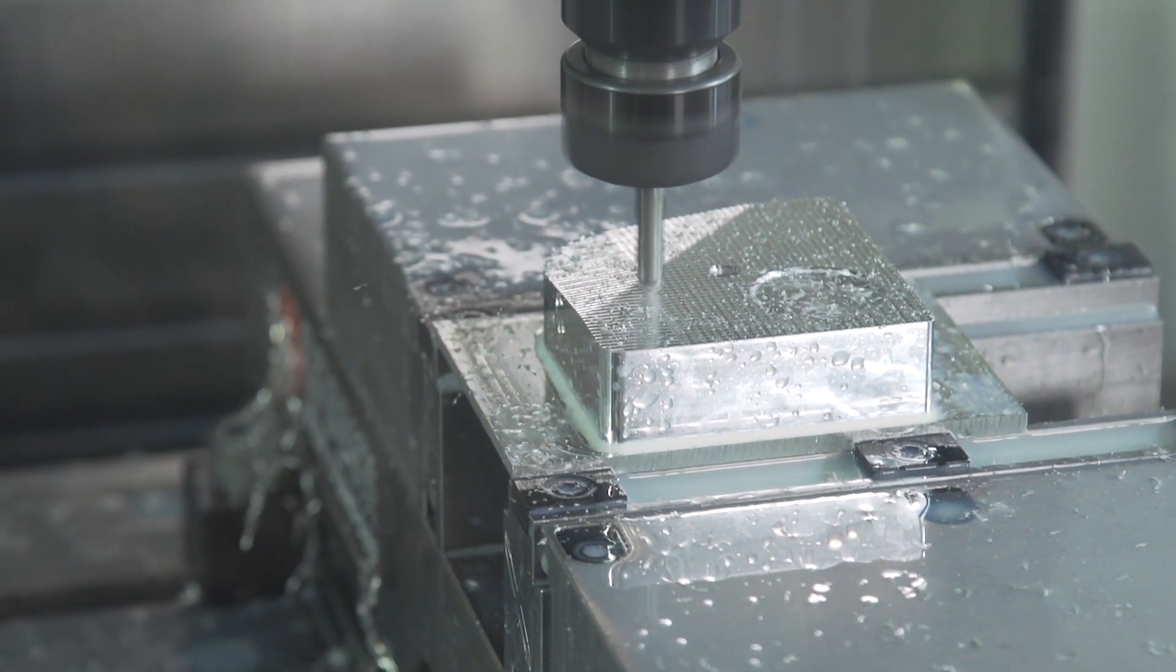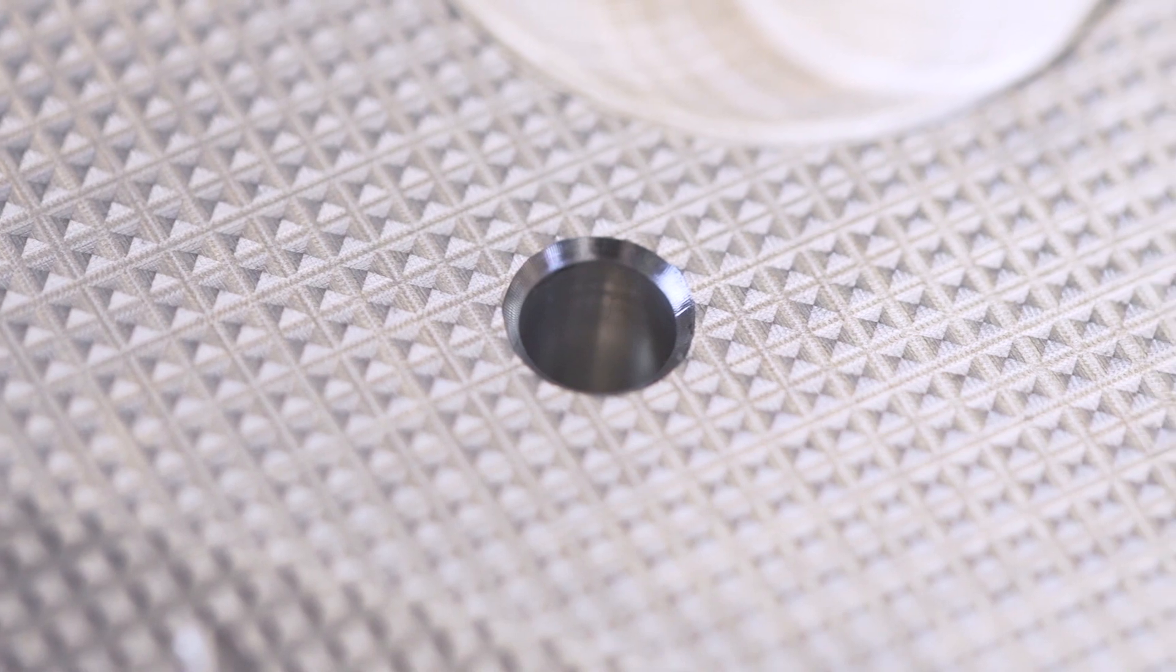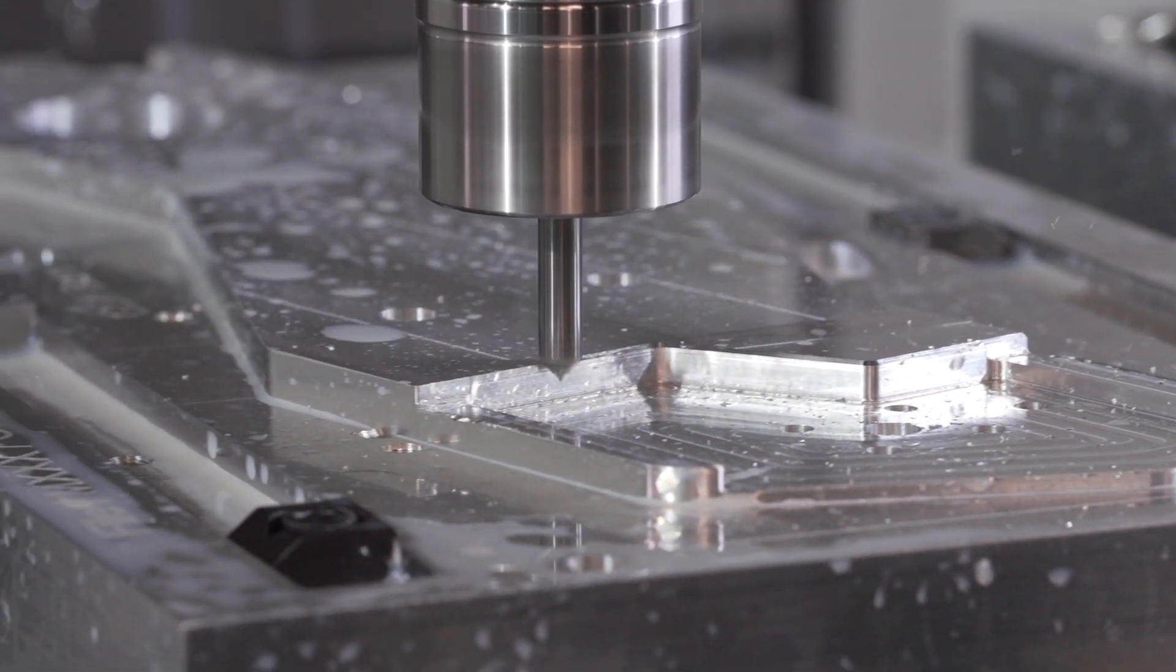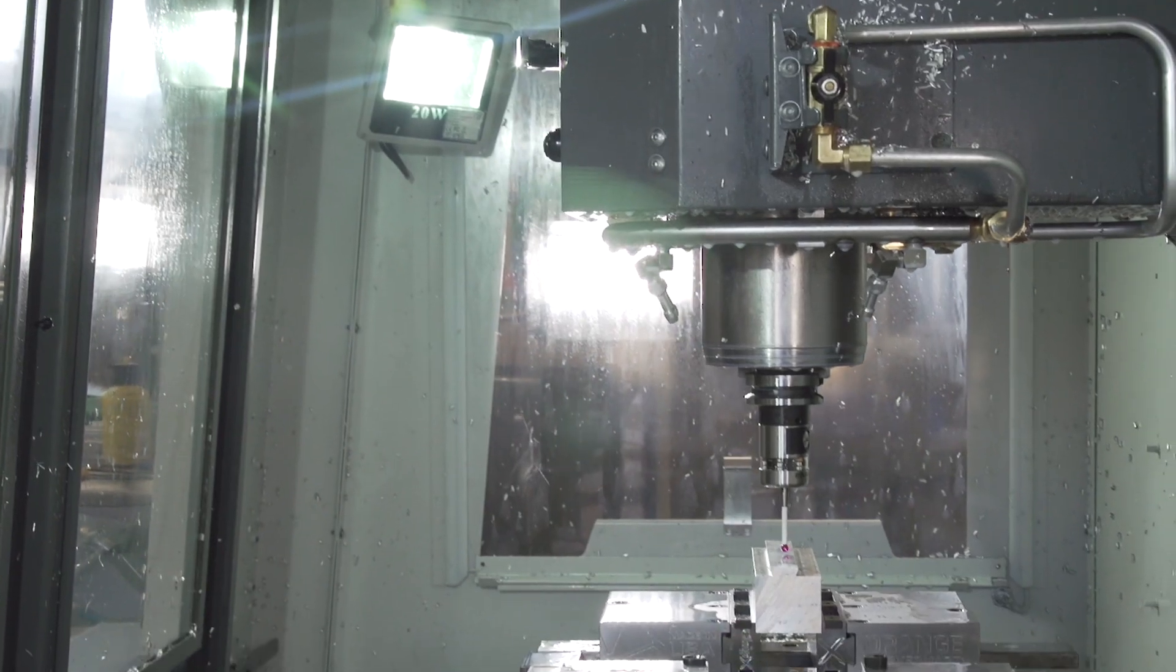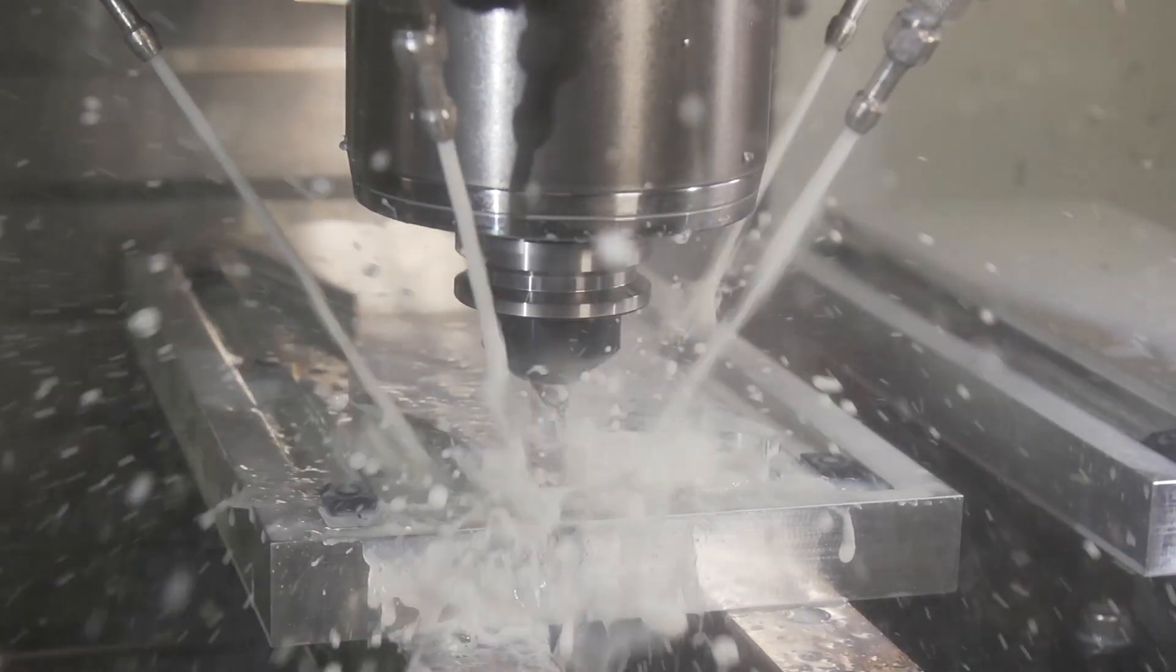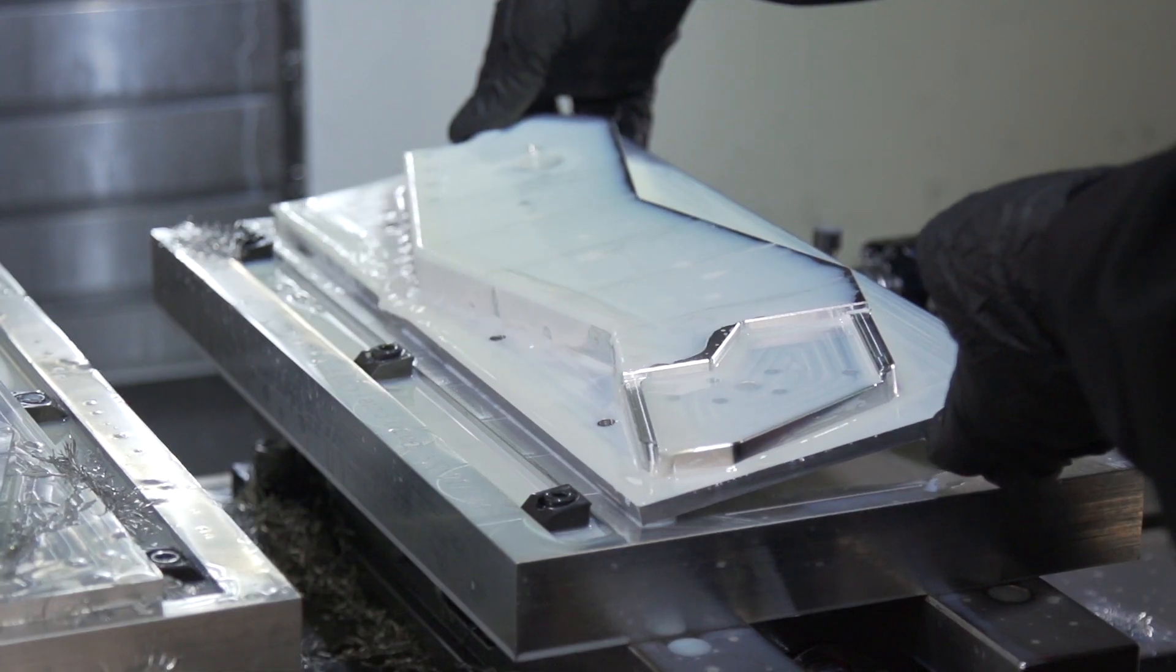One of the reasons we purchased a Haas was because we learned straight away how easy it was going to be to integrate Autodesk with the machine. I've heard horror stories about people buying other machines and not being able to post CAM out or having to get custom post processors made for their machines. But with Haas it was all there, with Autodesk it was all there, it worked. And I didn't have to worry about that stuff.